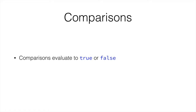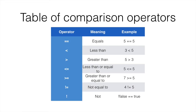Comparisons evaluate to true or false, and here is a table of comparisons. We have quite a few comparisons, but they are fairly simple and most of them you will know already. To assign a value to a variable, we use, for example, int age equals 5. To compare two values, we use two equal signs. So equals-equals is asking the computer whether something equals something else. In our example, 5 == 5 evaluates to true, because 5 has the same value as 5.